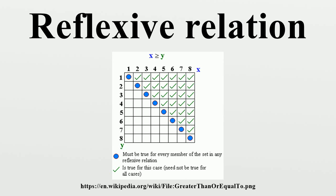The reflexive reduction, or irreflexive kernel, of a binary relation tilde on a set S is the smallest relation such that it shares the same reflexive closure as tilde. It can be seen in a way as the opposite of the reflexive closure. It is equivalent to the complement of the identity relation on S with regard to tilde.